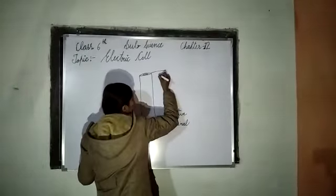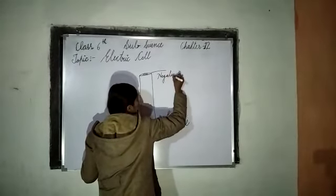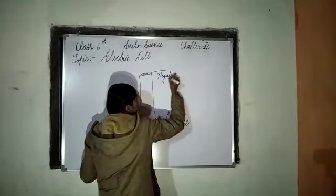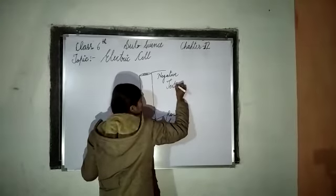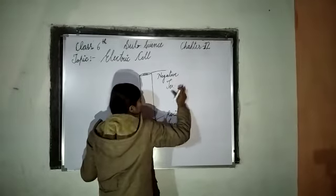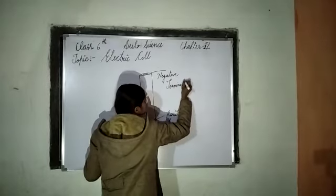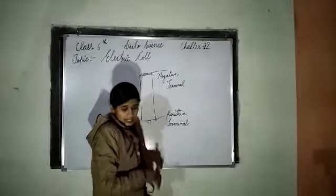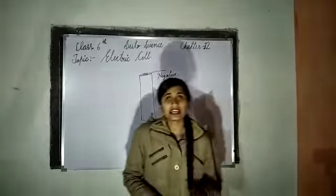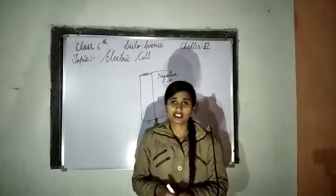This flat end is the negative terminal. So to summarize: chemical energy is converted into electrical energy inside the electric cell.